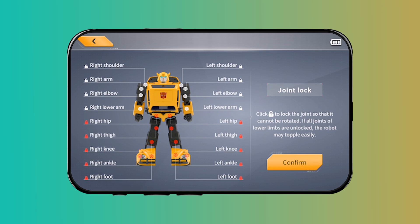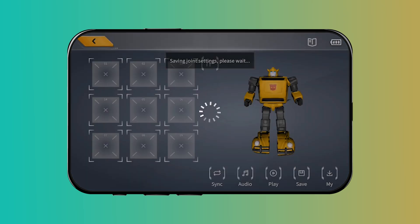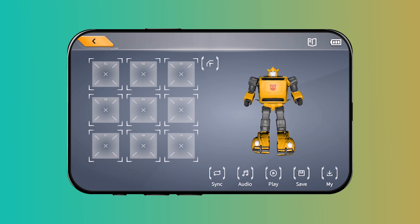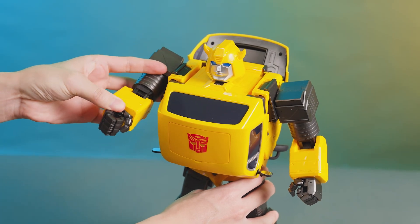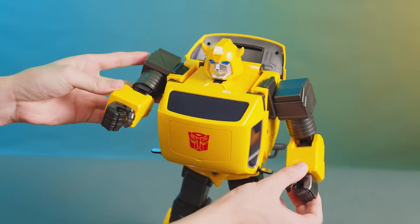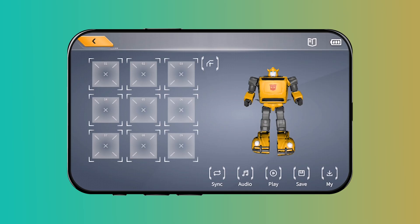Click return. Now let's program a set of punching actions. Rotate the right upper arm and the left lower arm of the robot freely to make a starting position for punching. Click sync after the first action is ready.